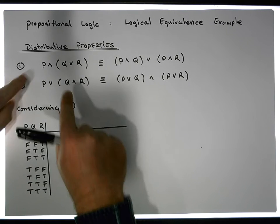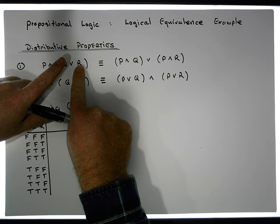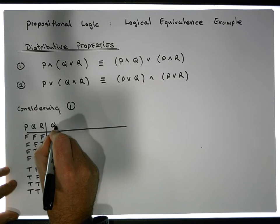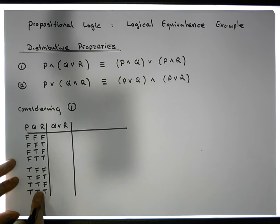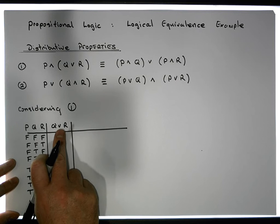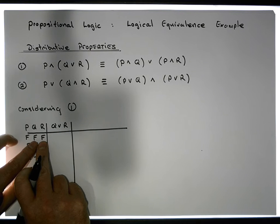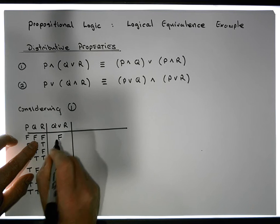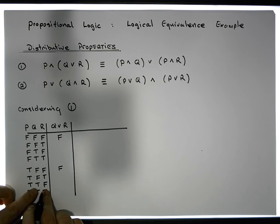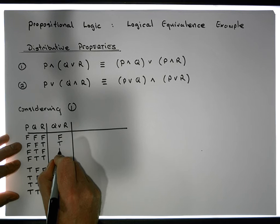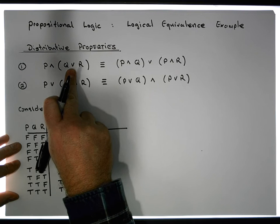The left-hand side is P ANDed with (Q OR R), but we need to do what's inside the brackets first — Q OR R. An OR only ever gives us false when both operands are simultaneously false. Looking at the Q and R columns, we have two simultaneous false values at rows one and three, so those give false. Everywhere else must be true.